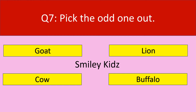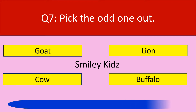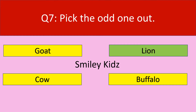Question number 7. Pick the odd one out: goat, lion, cow, buffalo. Your time starts now. The correct answer is lion, because goat, cow, and buffalo are herbivores and lion is a carnivore.